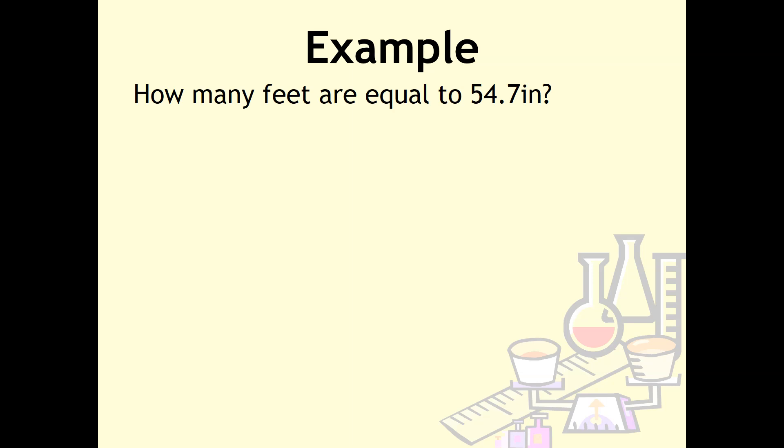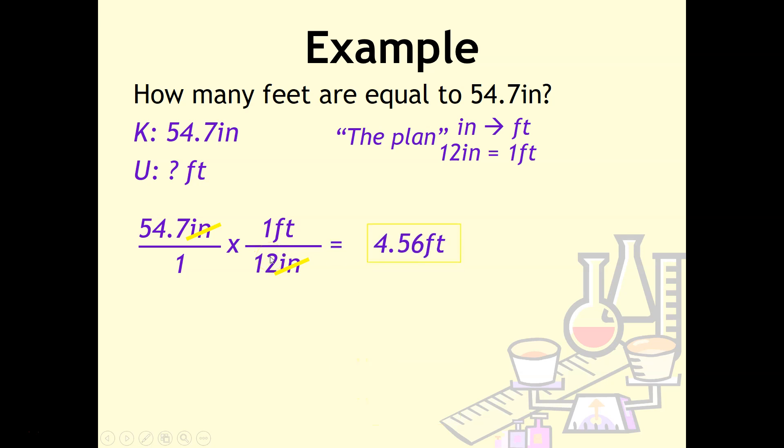This question asks, how many feet are equal to 54.7 inches? Follow along. We've got the known and the unknown. Next comes the plan. We're going from inches to feet, and we know that 12 inches equal one foot. We take our known and put it over one, then draw our multiplication sign and line. We've got inches on top, so 12 inches has to go on the bottom—it has to go diagonal for these units to cancel. So we put 12 inches on bottom and one foot on top. Inches and inches divide out. Watch your math: whatever's on top you multiply, whatever's on bottom you divide. Type 54.7 times one, then divide by 12, giving you 4.56 feet.